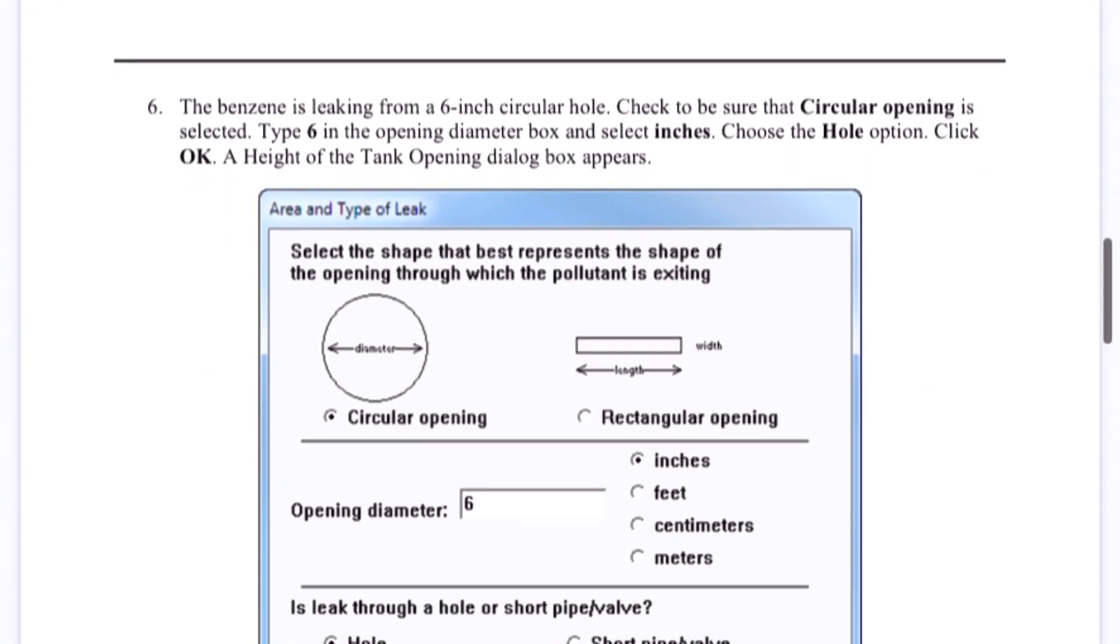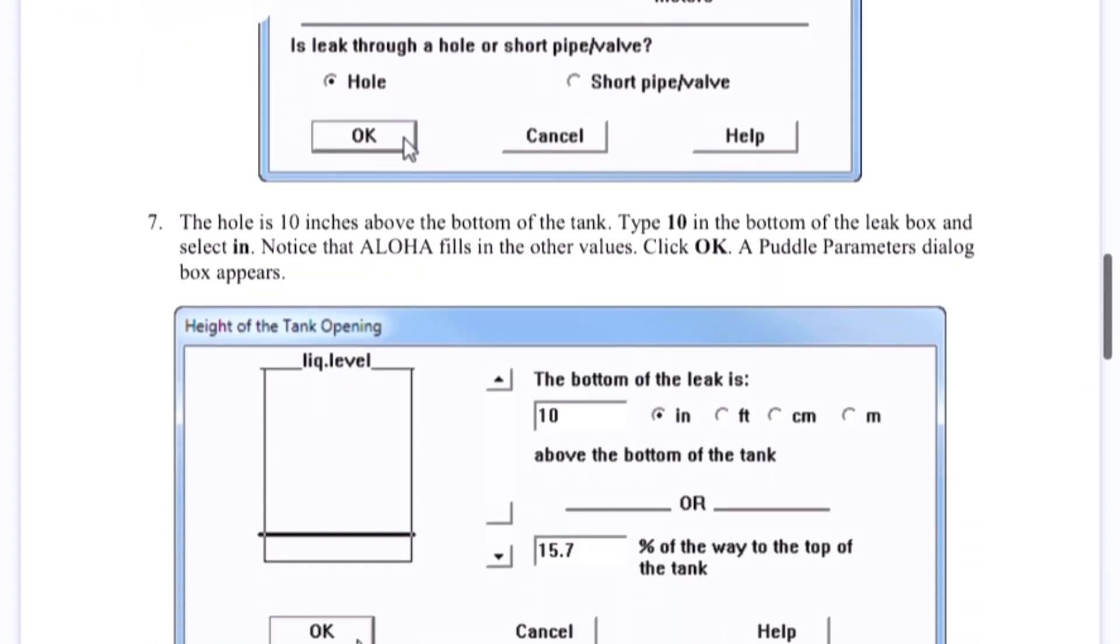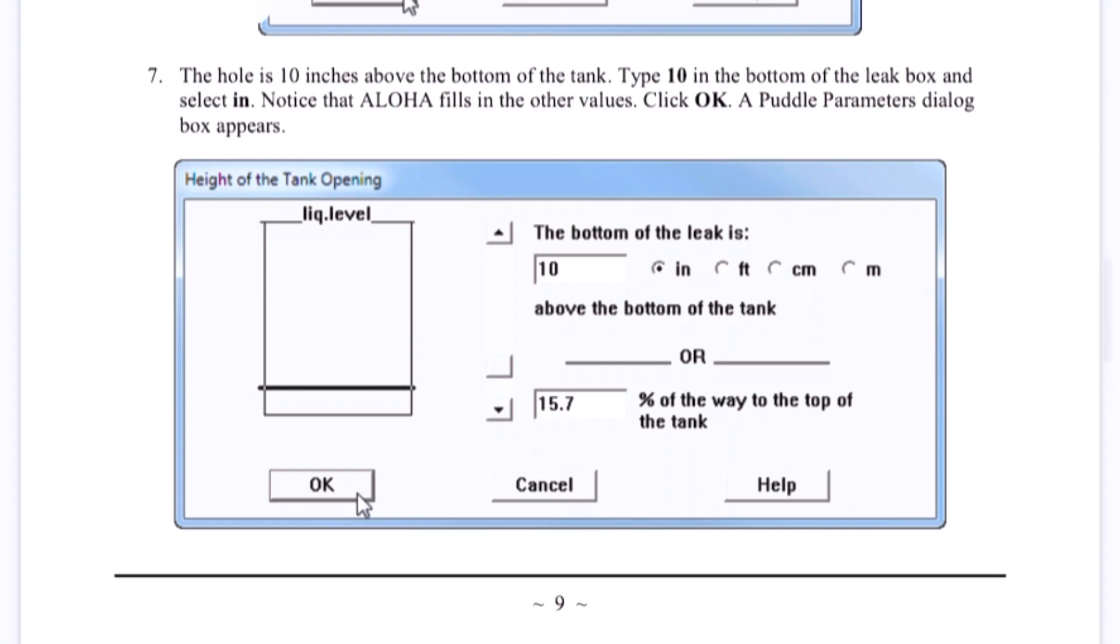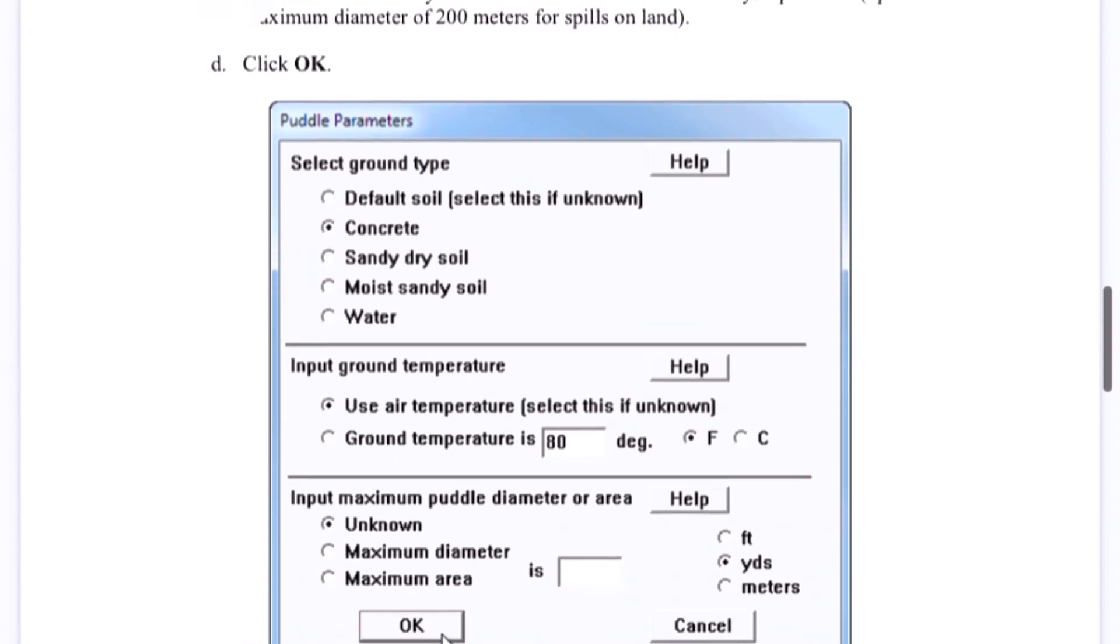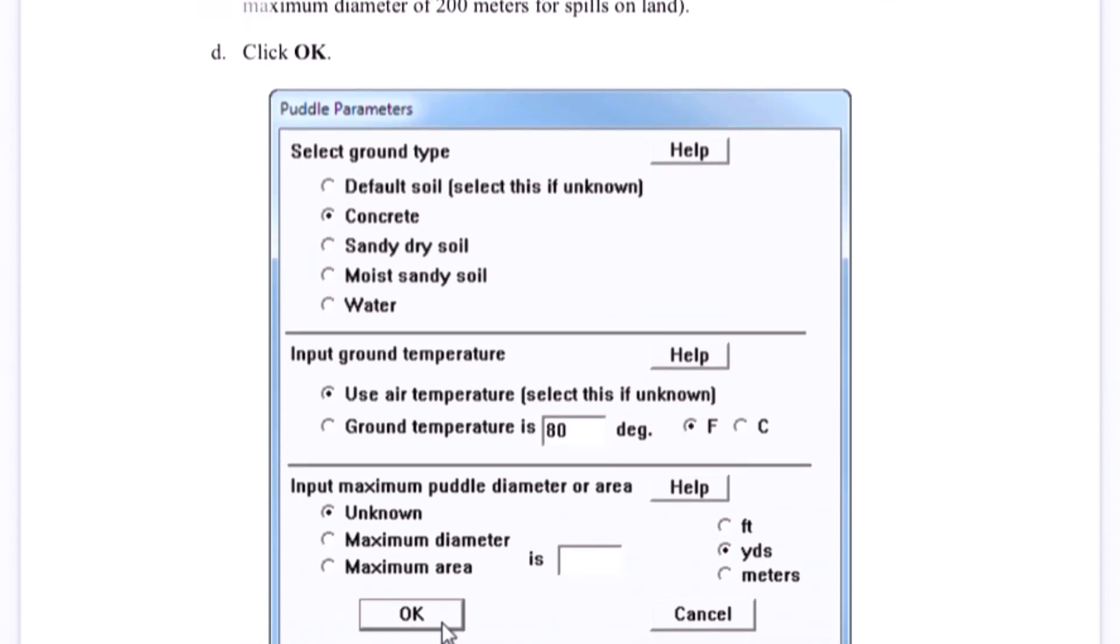That scenario we have to select for which we are looking. Then what type of leakage it is, whether it's a pinhole or the full rupture of the tank. What is the level of benzene in the tank from where that leakage is being happening. So all this information we select.